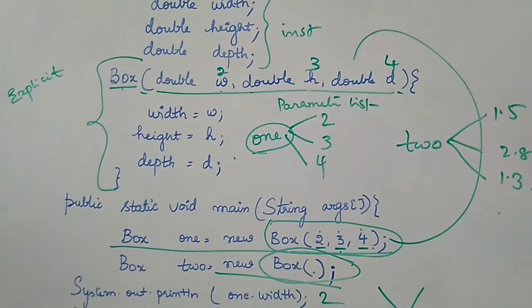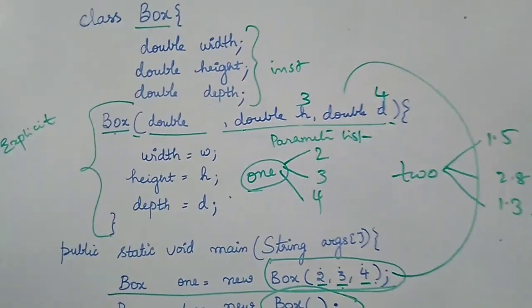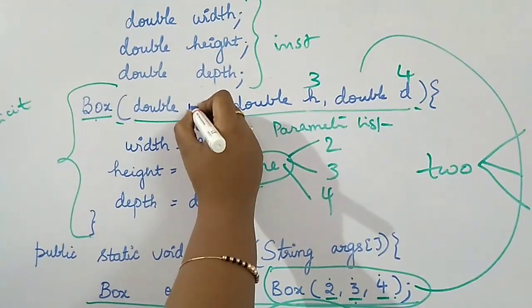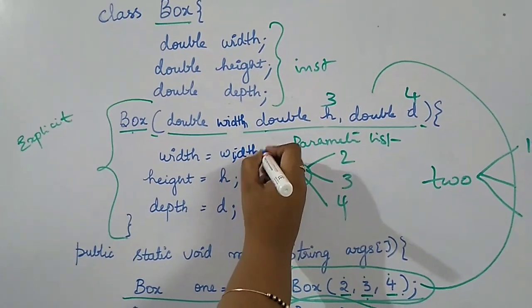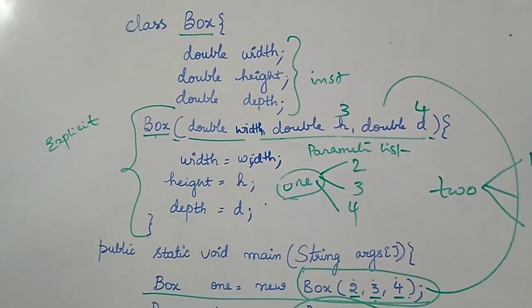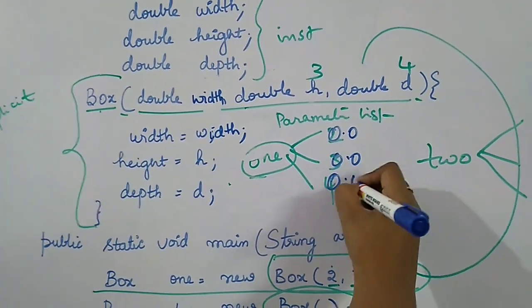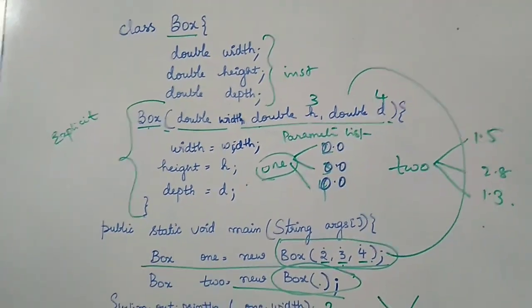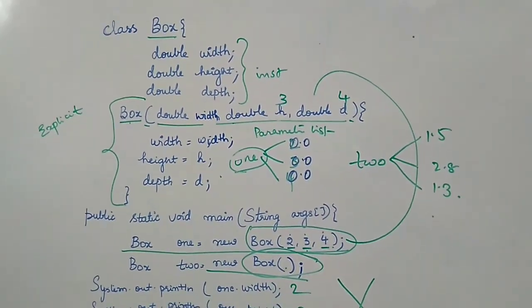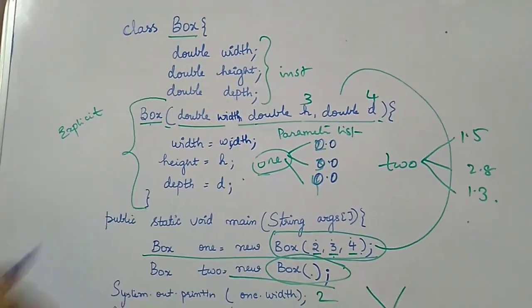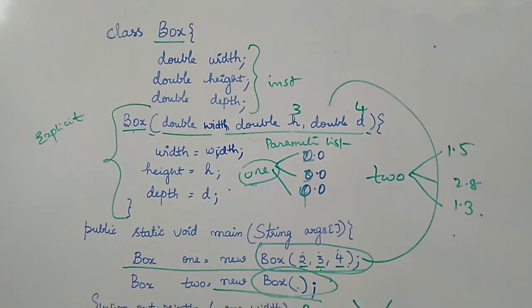Another point I want to add: if the formal argument names are the same as the instance variable names — for example, saying width = width — the compiler will be confused about which is the instance variable and which is the passed value. It will not assign the values, so the output will be 0.0 for all. To handle this correctly, we have to use the 'this' operator, which we will discuss later. I hope everyone understood how to write parameterized constructors.